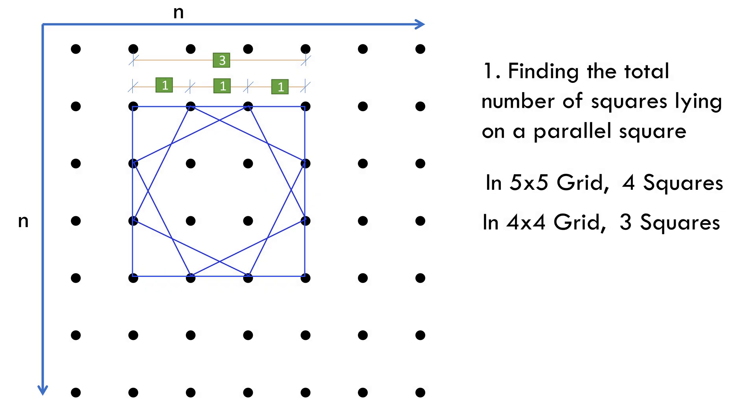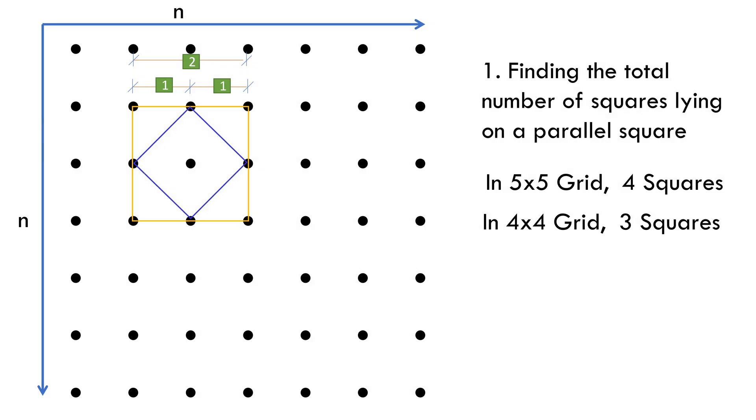Let's quickly take another example. A 3x3 grid with side 2. A total number of one tilted square and one itself. So, a total of 2 squares.